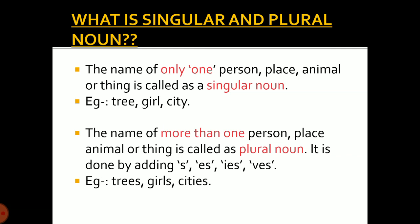On the basis of number, nouns are divided into two types: singular and plural. A singular noun is the name of only one person, place, animal, or thing. Singular relates to a single person, place, or thing. For example: tree, girl, city. Whenever we say tree, that means we are talking about only one tree.